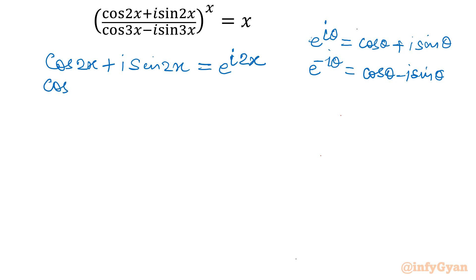Similarly, our denominator cos 3x minus i sine 3x can be written as e raised to the power minus i 3x. This is from complex numbers. Any complex number in Cartesian plane, we can write in exponential form.